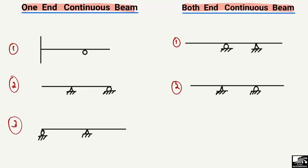The main difference is that in the case of the one-end continuous beam, the beam is continuous only on one end. For example, in this first example, one end has a fixed support provided. The one end is fixed, but if we look at the other end, there is no support provided at that end — so that one end is free. That's why it is known as the one-end continuous beam.